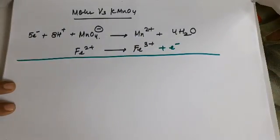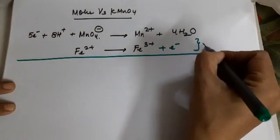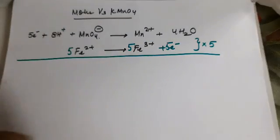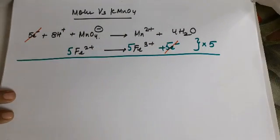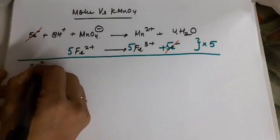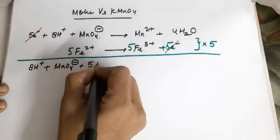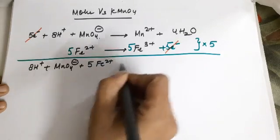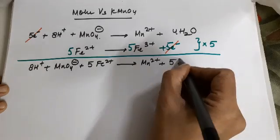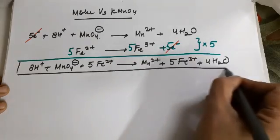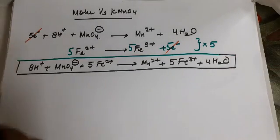Adding the two half-equations, the net equation must not contain electrons. So multiply the Fe²⁺/Fe³⁺ equation by five, giving five Fe²⁺ and five Fe³⁺. This cancels the electrons. The net reaction is: 8H⁺ + MnO₄⁻ + 5Fe²⁺ → Mn²⁺ + 5Fe³⁺ + 4H₂O. This is your net reaction during titration and will be used for all calculations.